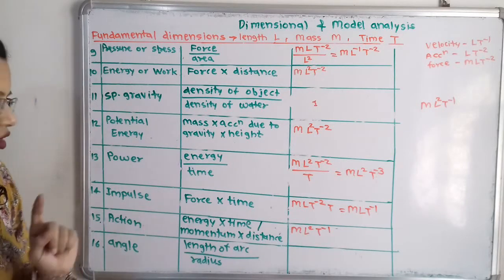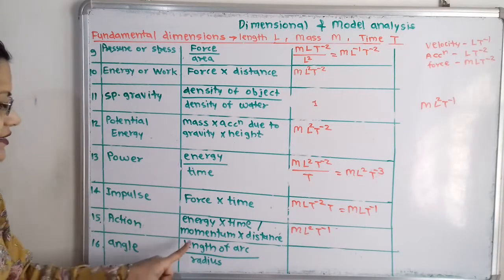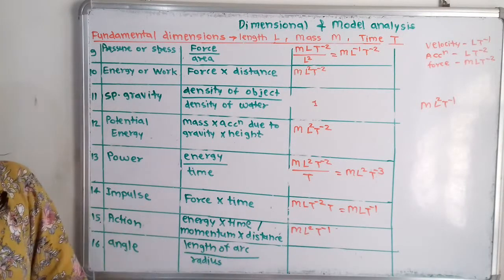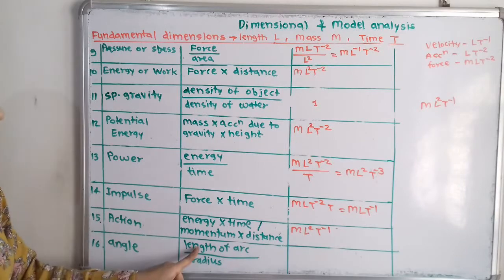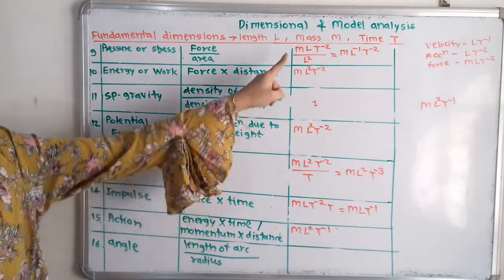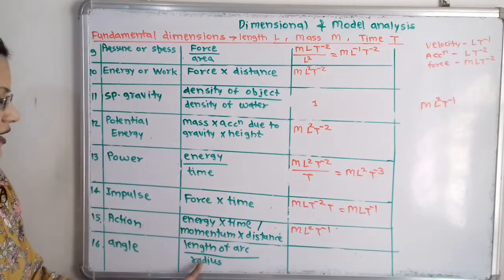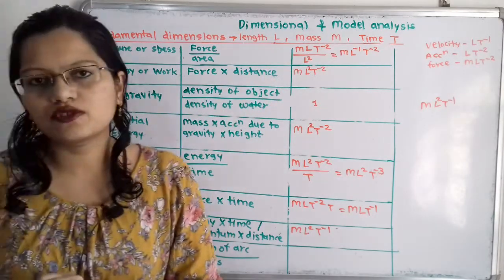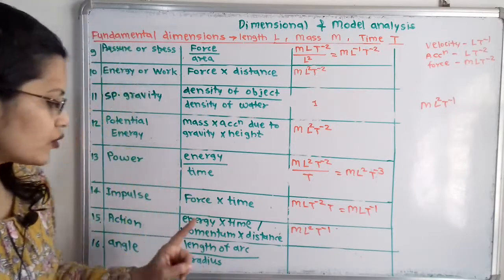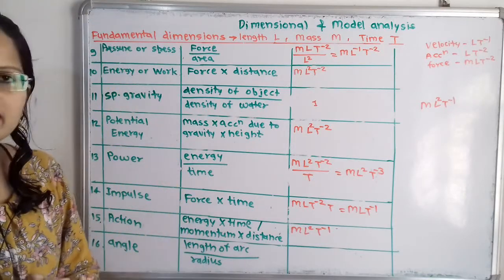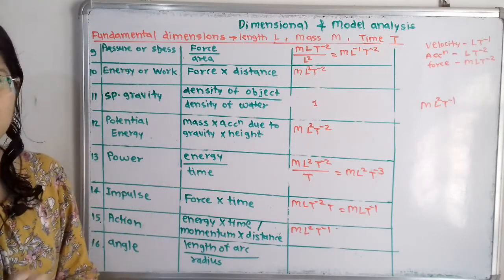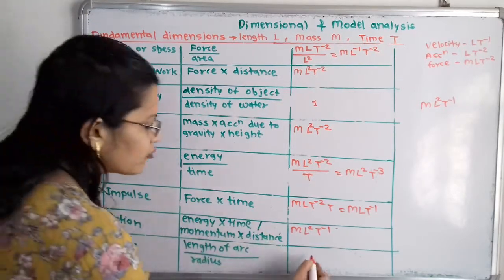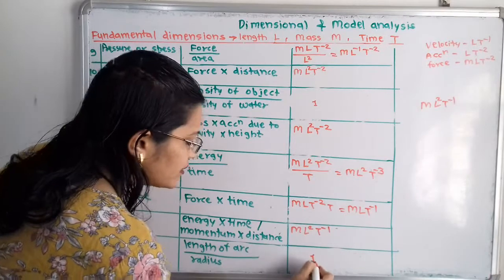Then angle. Angle is length of arc by radius. Length of arc is L and radius is also L, so L over L cancels — this is dimensionless, and we write 1.